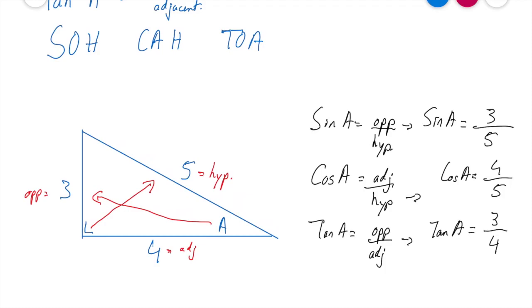And now I've identified what the sin A, cos A and tan A of a right-angled triangle is. If any questions, ask below in the comments. If you enjoyed the video, give it a like and why not subscribe to the channel? Thanks very much for watching, folks. See you in the next video.